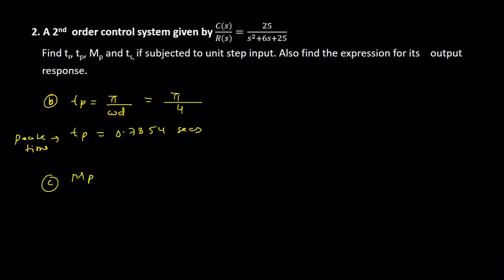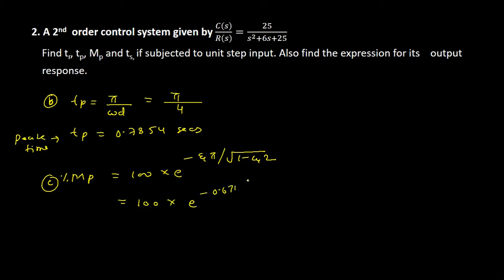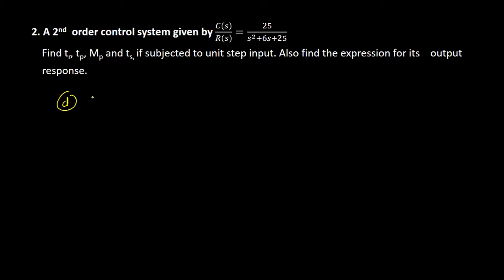For part C, maximum overshoot (or peak overshoot) expressed as a percentage is: 100 times e to the power of (minus zeta·pi divided by sqrt(1 minus zeta squared)). Substituting zeta equals 0.6, we get 100 times e to the power of (minus 0.6·pi divided by sqrt(1 minus 0.36)). Solving this, the percentage maximum overshoot mp equals 9.48 percent.